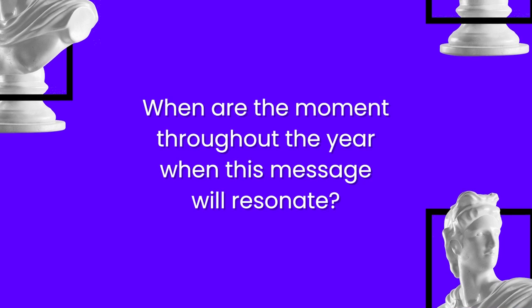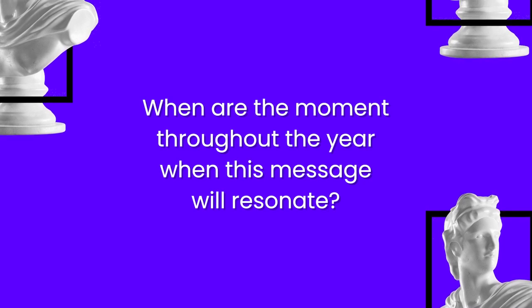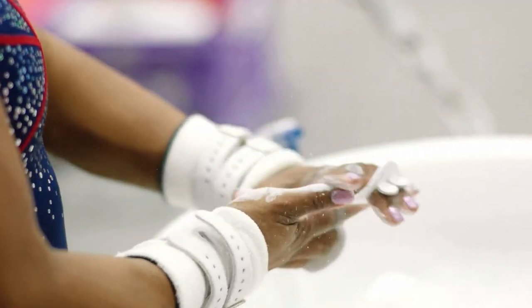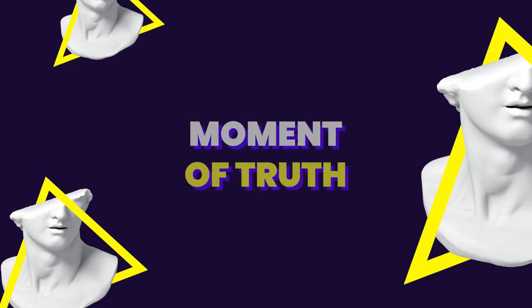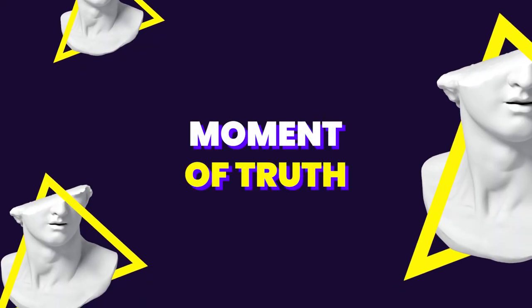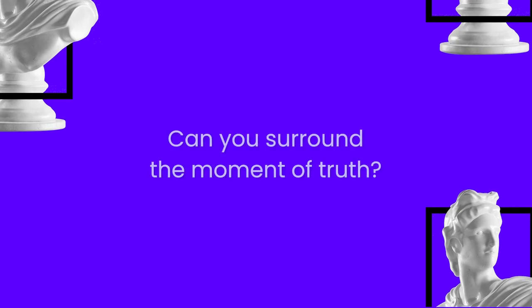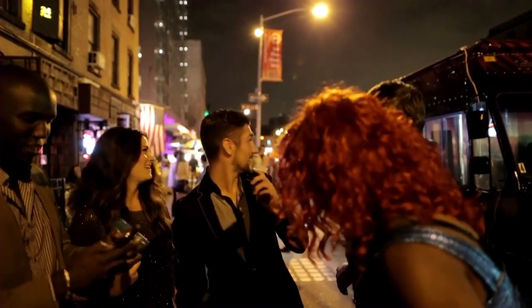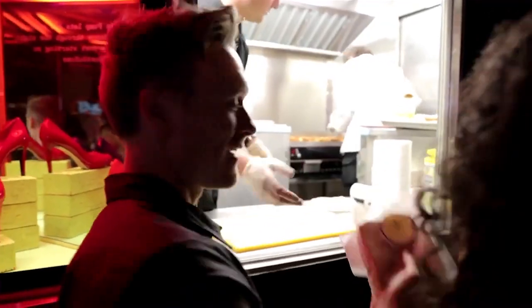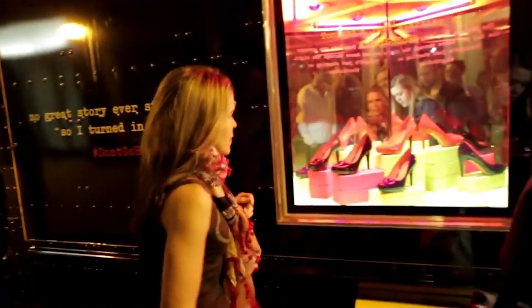The second question to ask is: what are the moments throughout the year when this message will really resonate? With the Nike example, the question would have been: when throughout the year are people thinking about the greatness of athletes? Finally, you want to see if you can surround your moment of truth for the idea. For Cole Haan, the moment of truth was when people need to go home — they covered the moment at night when people are thinking about going home.